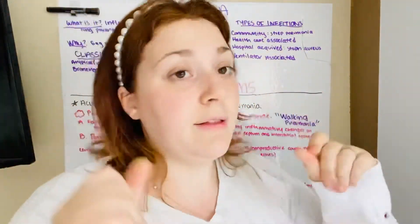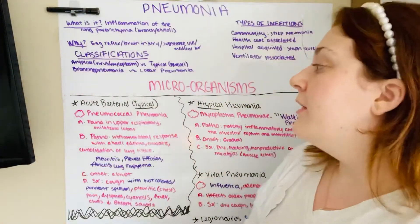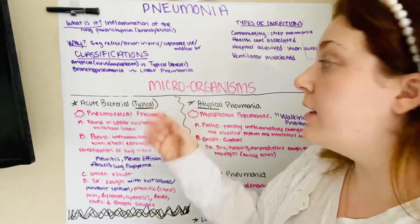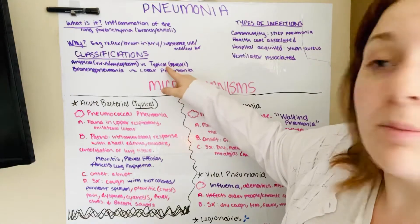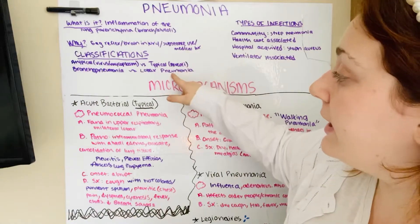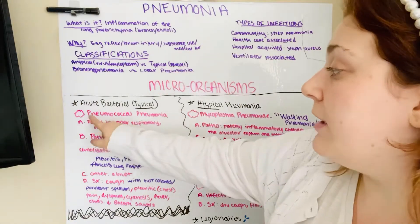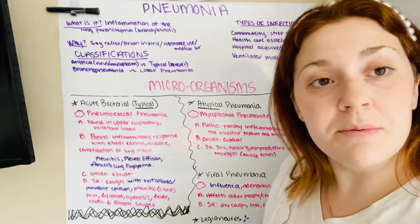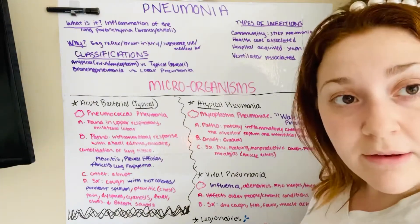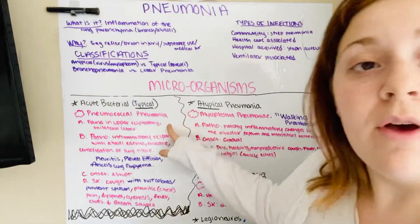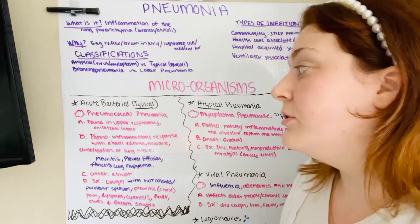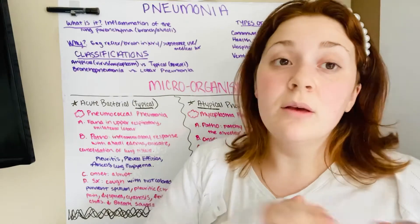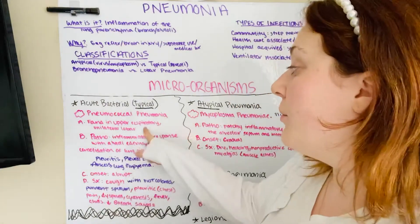Let's get into the microorganisms themselves. Acute bacterial, otherwise known as typical, because it has bacteria in the alveoli. The type is pneumococcal pneumonia, or other types are streptococcus or staph aureus. These are found in the upper respiratory and they're unilateral lobar — not bilateral, usually in one side.